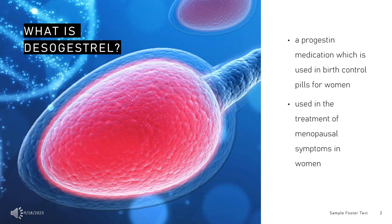Desogestrel is a progestin medication which is used in birth control pills for women. It is also used in the treatment of menopausal symptoms in women. The medication is available and used alone or in combination with an estrogen. It is taken by mouth. Desogestrel was discovered in 1972 and was introduced for medical use in Europe in 1981. It became available in the United States in 1992. Desogestrel is sometimes referred to as a third-generation progestin.